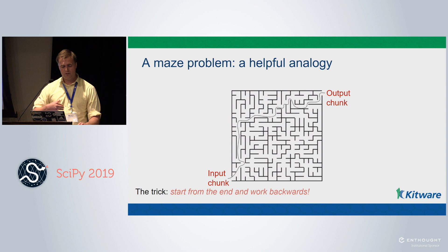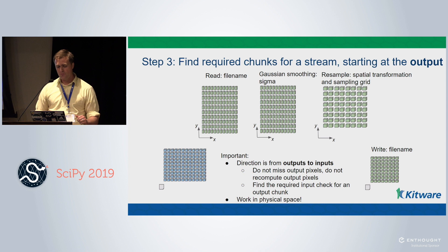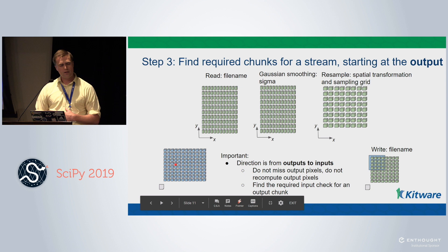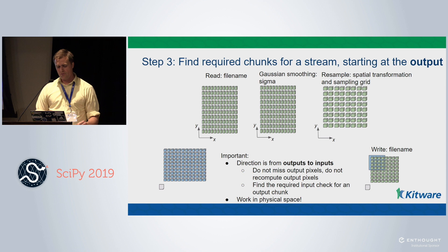Step three: we've determined what our outputs are going to be, and we chunk on the outputs and work backwards to figure out what chunks we need from the input. This is important — if we tried to start chunking on the input, which is the intuitive approach, and moved forward trying to produce a certain output, there are many different options.